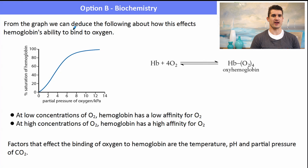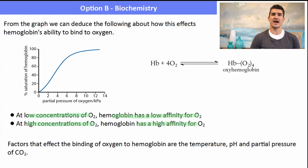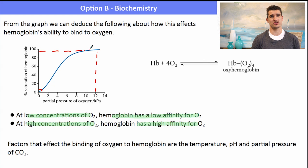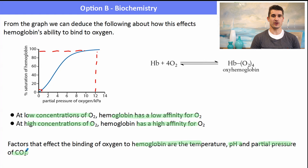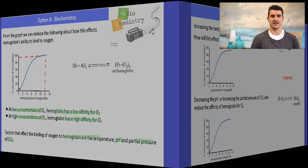From the dissociation curve: at low O₂ concentrations, hemoglobin has a low affinity for O₂. At higher O₂ concentrations, hemoglobin has a high affinity for O₂ — it gets easier to bind oxygen the more O₂ is present and the more heme units already have oxygen bound. The factors that affect this binding are temperature, pH, and partial pressure of CO₂.